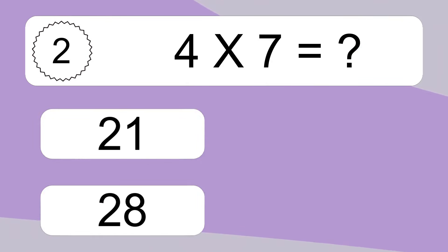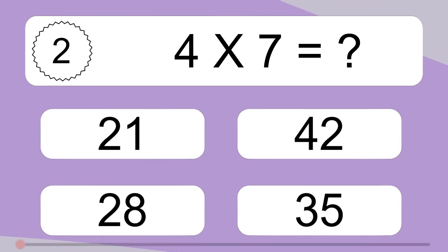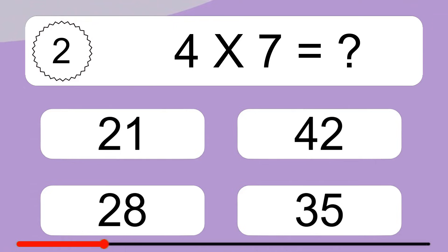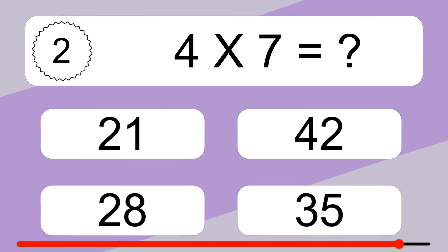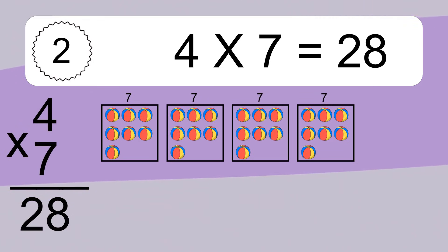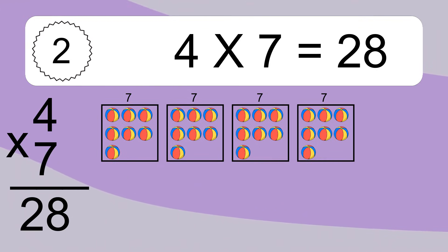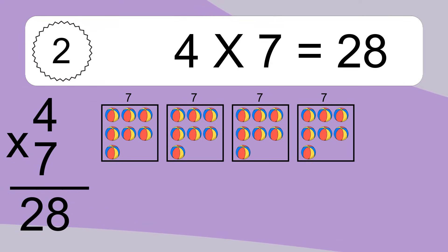4 times 7 equals what? We have 4 boxes, and each box has 7 colorful balls inside. If you count all the balls in all the boxes together, you will have 4 times 7 balls. This equals 28 balls.